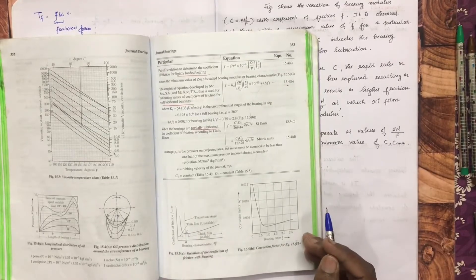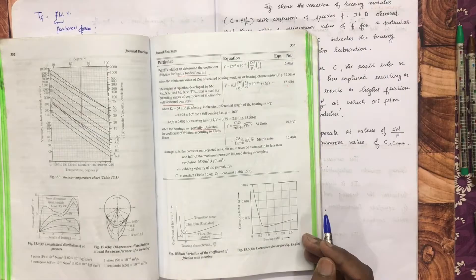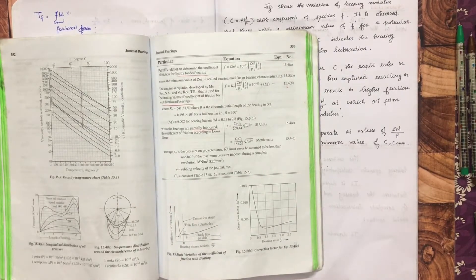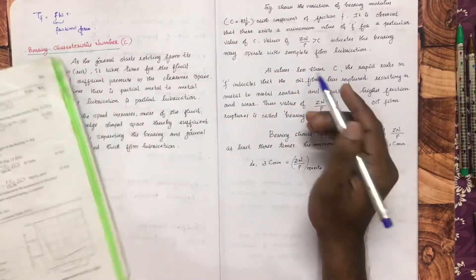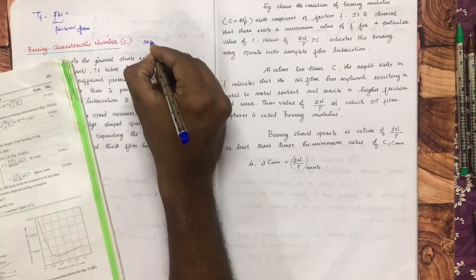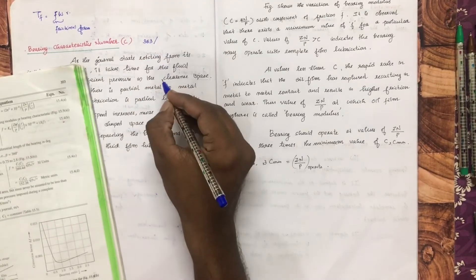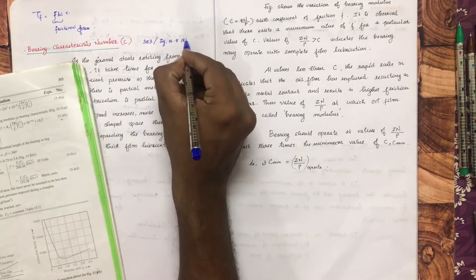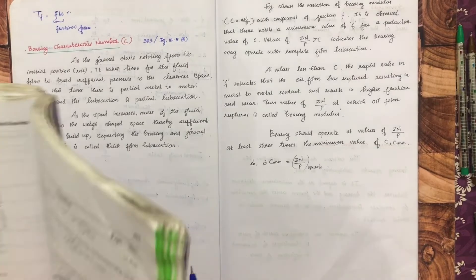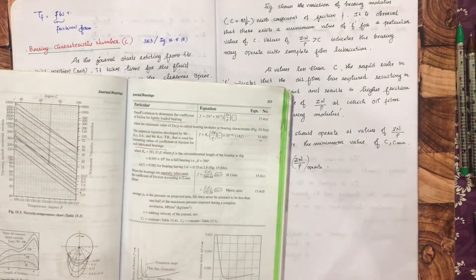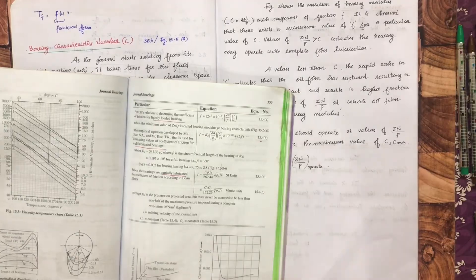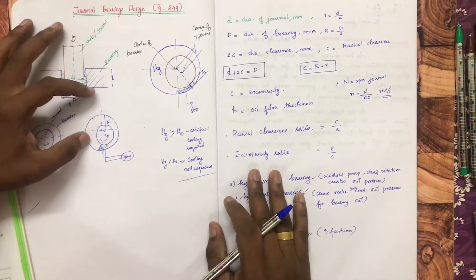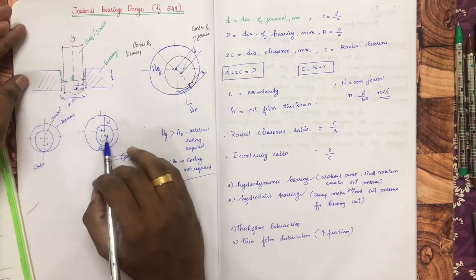The concept of journal bearing is explained. The figure is on page number 53, specifically figure 15.5A. The variation is the same — the Bearing Characteristics Number and its significance are shown.